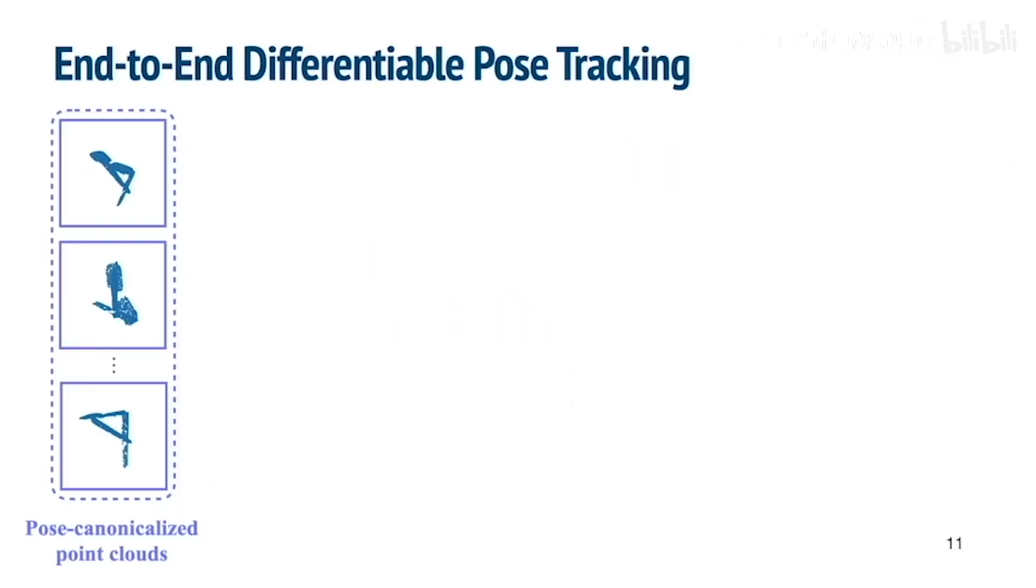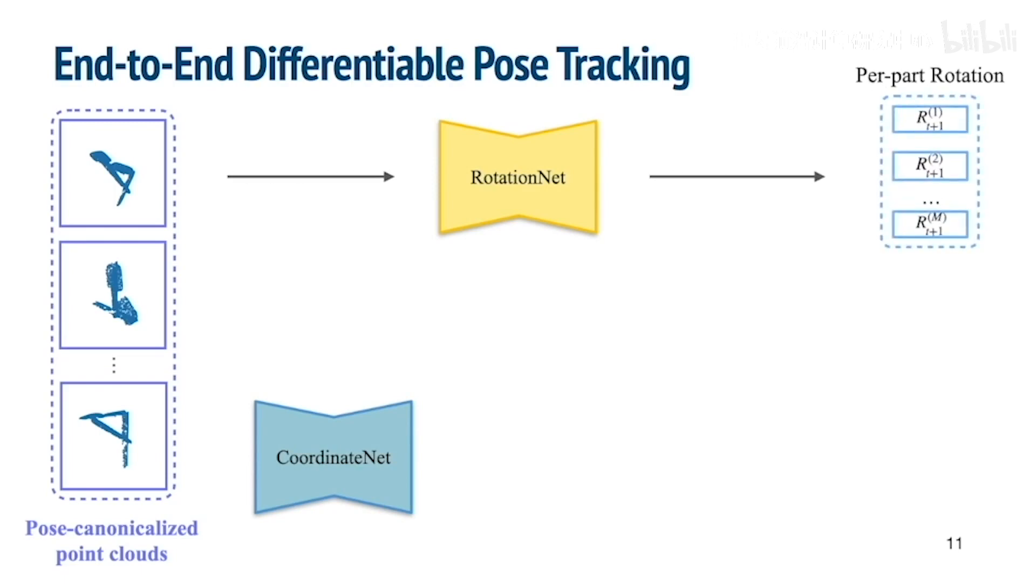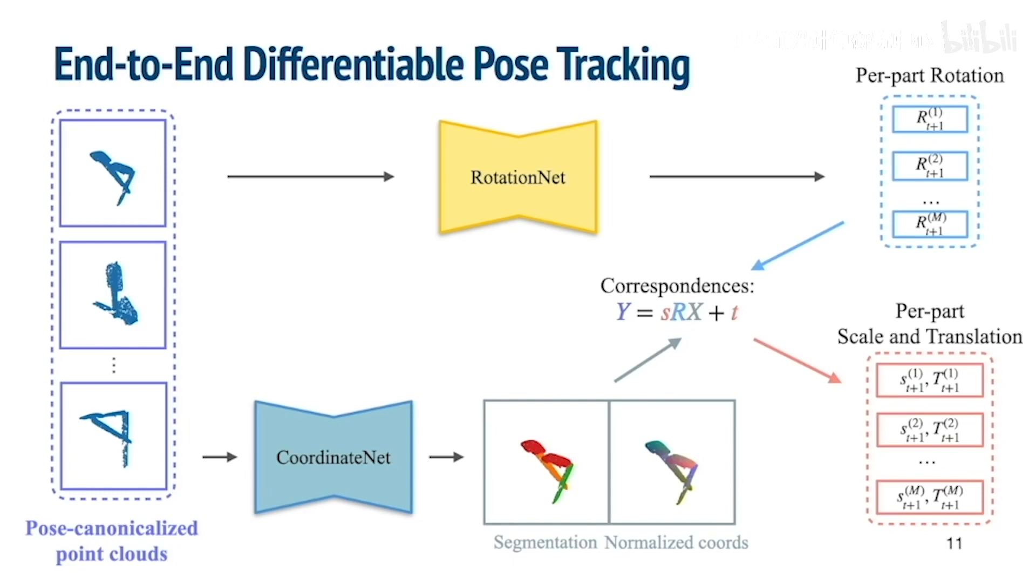To take the best of both worlds, our framework combines the two aforementioned approaches by constructing rotation net and coordinate net. Thanks to pose-canonicalized point clouds, our rotation net can directly and accurately regress residual rotations, thus being free from using RANSAC. At the same time, our coordinate net predicts part segmentation and normalized coordinates, from which we can analytically compute per-part scales and translations with high accuracy. This results in an end-to-end differentiable pose tracking pipeline optimized for accuracy, robustness, and speed.